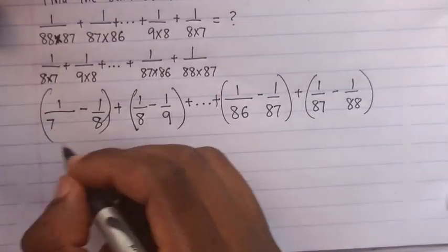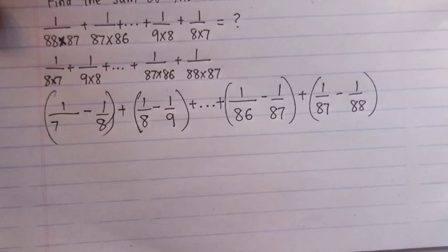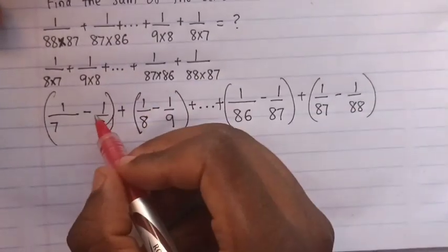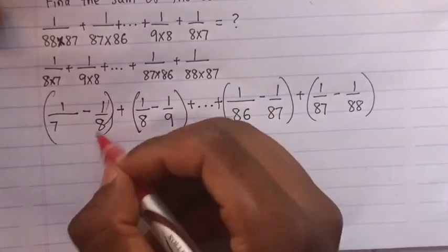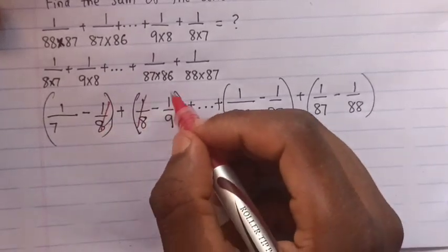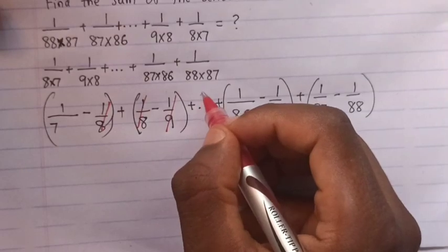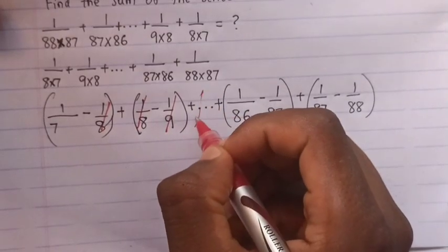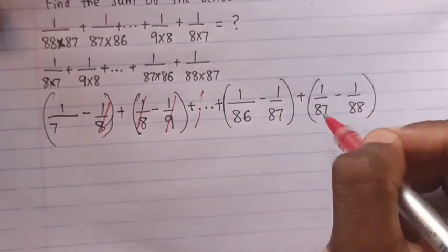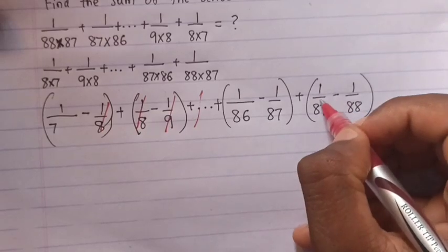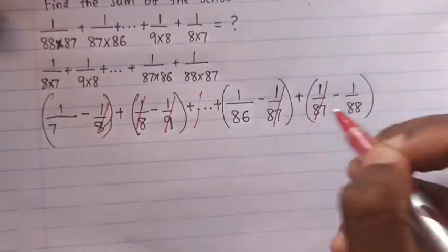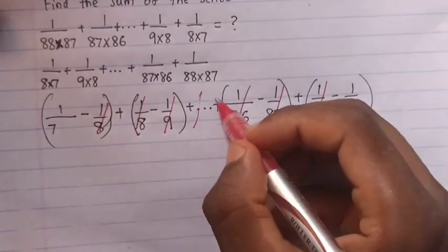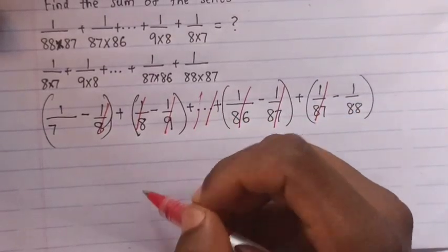So here, this one, this one, this one is same as, this is minus 1 over 8, this is plus 1 over 8, so this one goes. This one, and then this one minus 1 over 9, it will go to this one. And then this one, 1 over 87 minus 1 over 87, this one goes to this one, and then this one will go to this one.